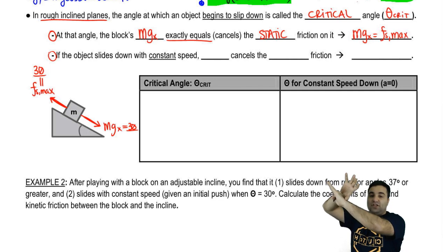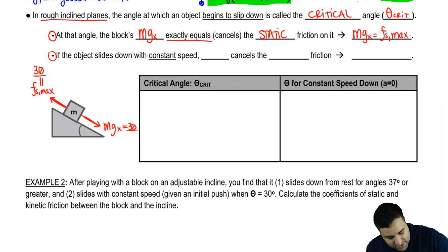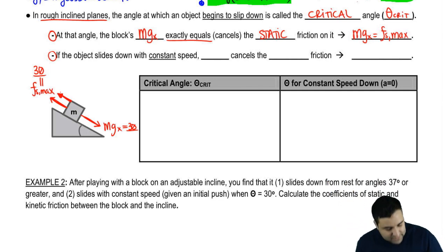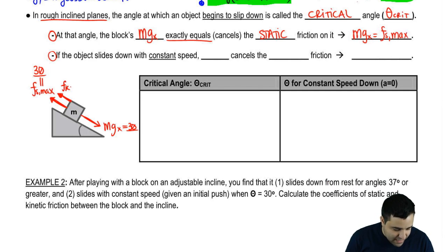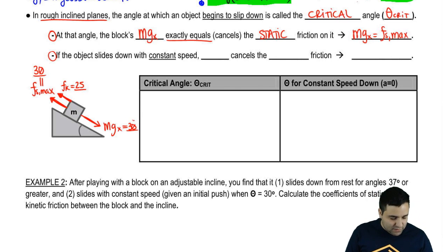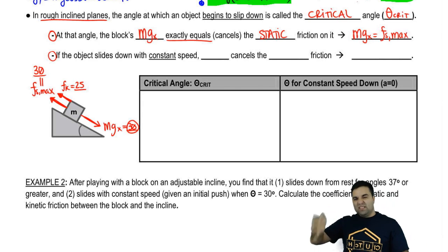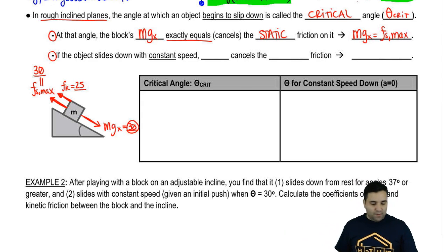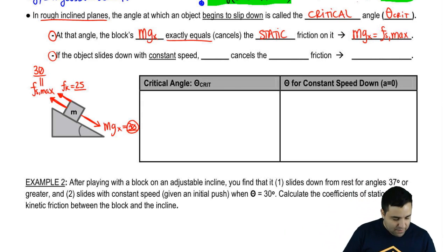Because kinetic friction is less, the second this block starts moving, friction kinetic drops — say from 30 down to 25. The only reason it started moving in the first place was because mgx was 30 or just barely over 30.